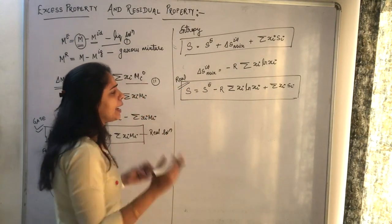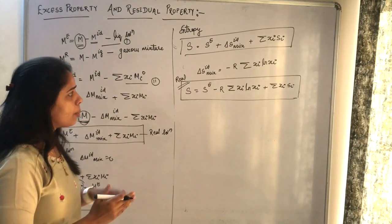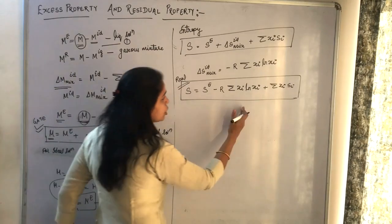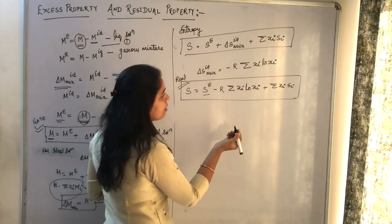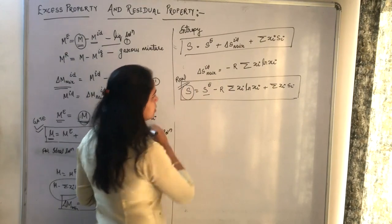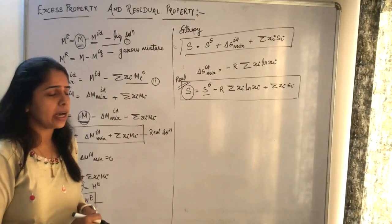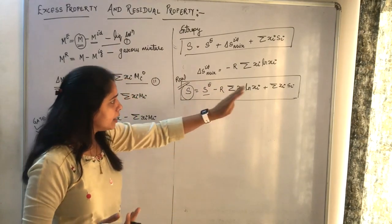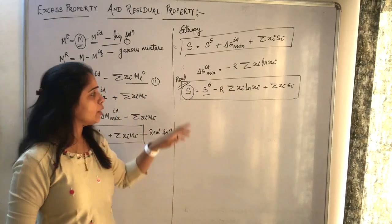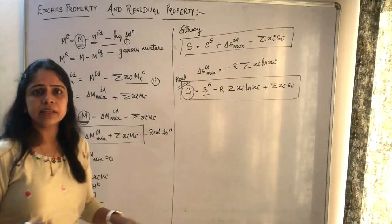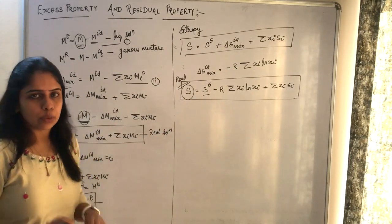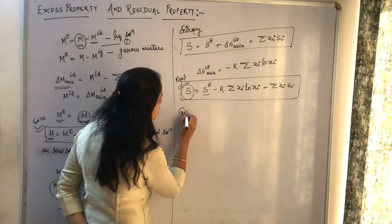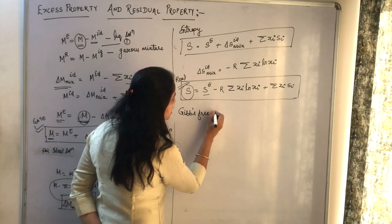This is a very important relation — many GATE questions are based on excess properties. They can either ask directly about this relation or give values of excess entropy, mole fractions, and individual entropies, and ask you to find the entropy of the solution. If these values are given, you can easily find the entropy of the solution.